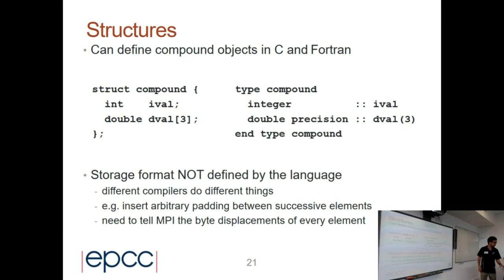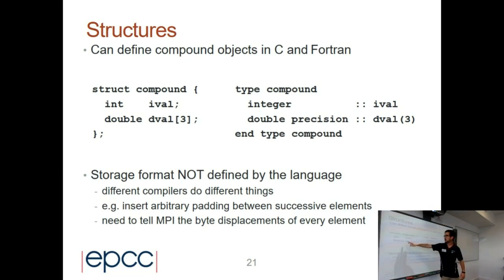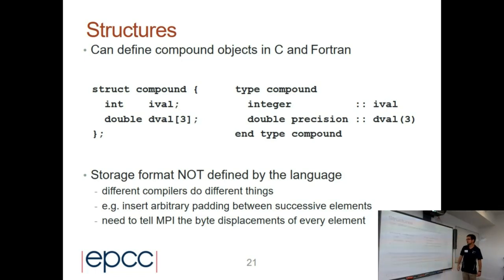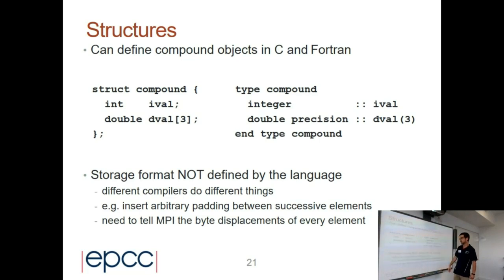To finish, we can also define a structure. For example, here we have an integer and a vector of three doubles. We can define this vector of doubles as a contiguous type, and then use this contiguous type to define the full structure.